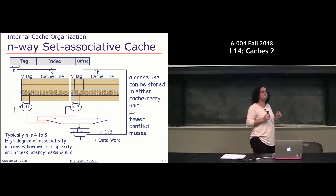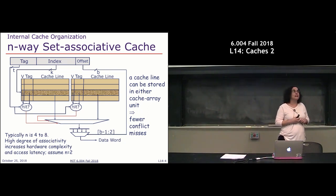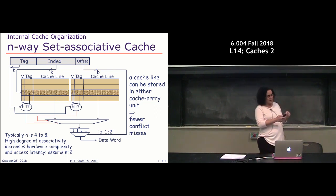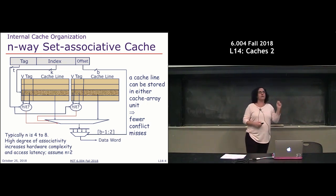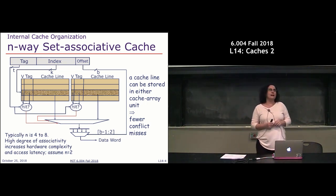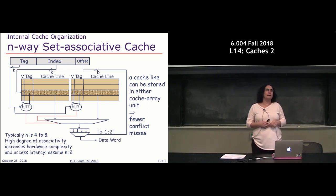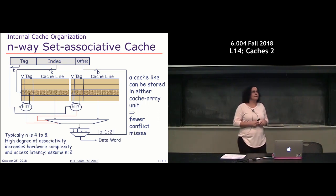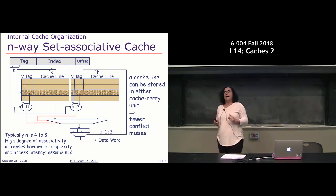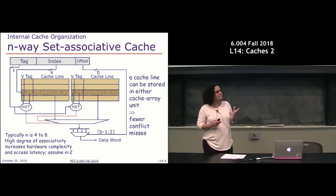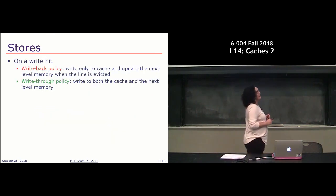If way one gave me a hit, I get the data from that way through a multiplexer, then use my offset bits to select the particular word I was looking for within that line. Whether there's a hit is checked by additional logic that controls whether to use the cache data or make a request to main memory. That at a high level summarizes what we learned last time.